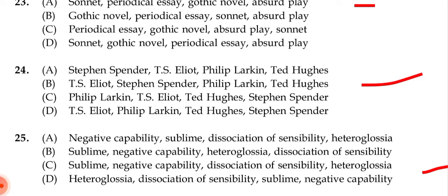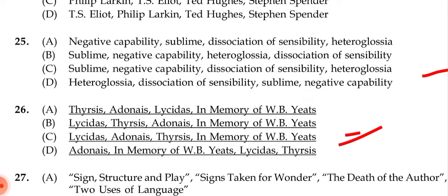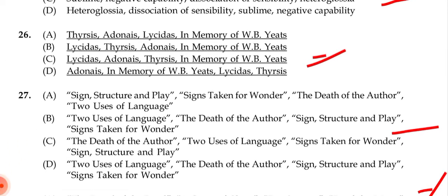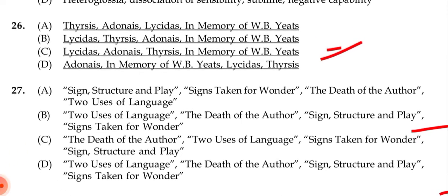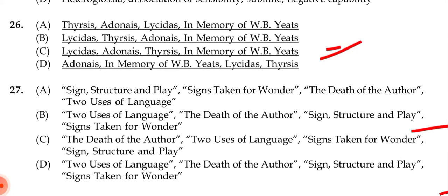Question 25: The correct answer is (d) — please verify — the order is: heteroglossia, dissociation of sensibility, sublime, then negative capability. Question 26: The correct answer is (d): In Memoriam, then Adonais, then Lycidas, then Thyrsis.